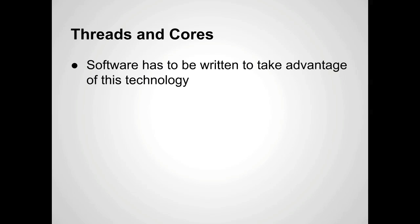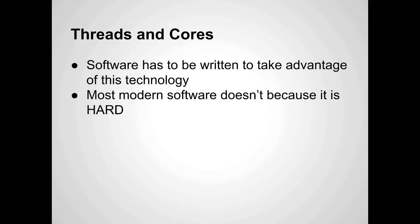The problem with threads and cores is that you have to have software written specifically to take advantage of the technology. Say you bought the new AMD processor with eight cores — there's no guarantee you're going to have any software that will make use of all eight of those cores. The same thing with hyper-threading: you need software written to take advantage of it. Most modern software doesn't, because writing code for multi-threads and multiple cores is very, very challenging.